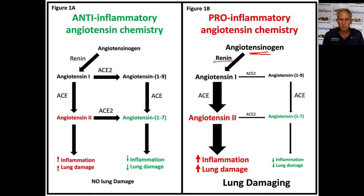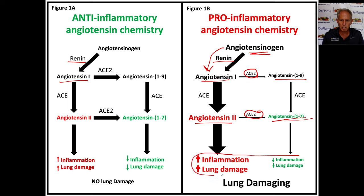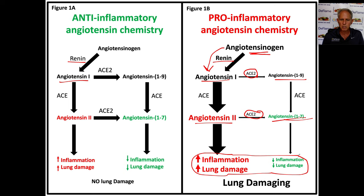Renin is overproduced in obese, diabetic individuals. Renin causes this conversion, so there is more angiotensin-1 compared to deflamed people. With excess angiotensin-1, there is less conversion to 1-9 and less conversion to 1-7 because the ACE2 enzyme is inhibited by the pro-inflammatory state created by obesity, diabetes, aging, and heart disease. This leads to an imbalance between pro-inflammatory angiotensin-2 and anti-inflammatory angiotensin-1-7. Obese diabetics are also more likely to have a poor outcome from seasonal flu because they're already living in a pro-inflammatory lung state.